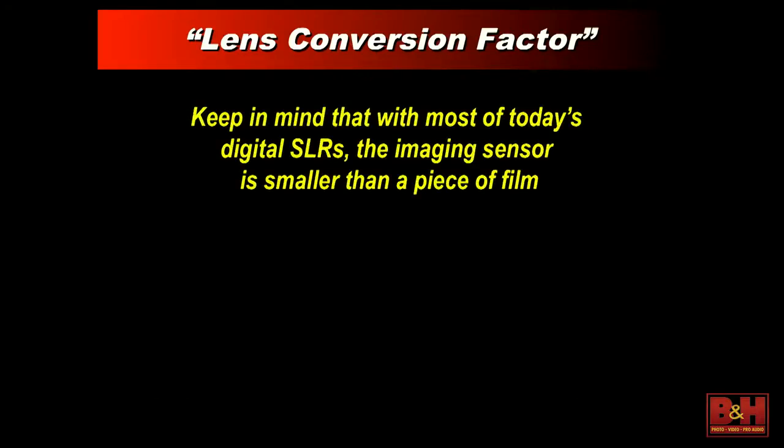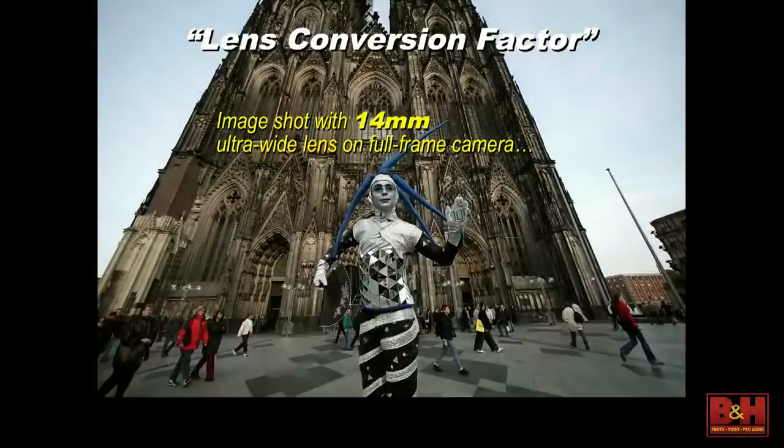Many of us today are shooting with cameras that don't have a full-frame sensor. For Canon shooters using any version of a digital Rebel, a mid-range camera like the 50D, 60D, or 70D, or any version of the 7D, you're dealing with a smaller APS-C size sensor. That has an effect on the lens categories and what the lenses will do. We have this thing called a lens conversion factor, which takes that sensor size into account.